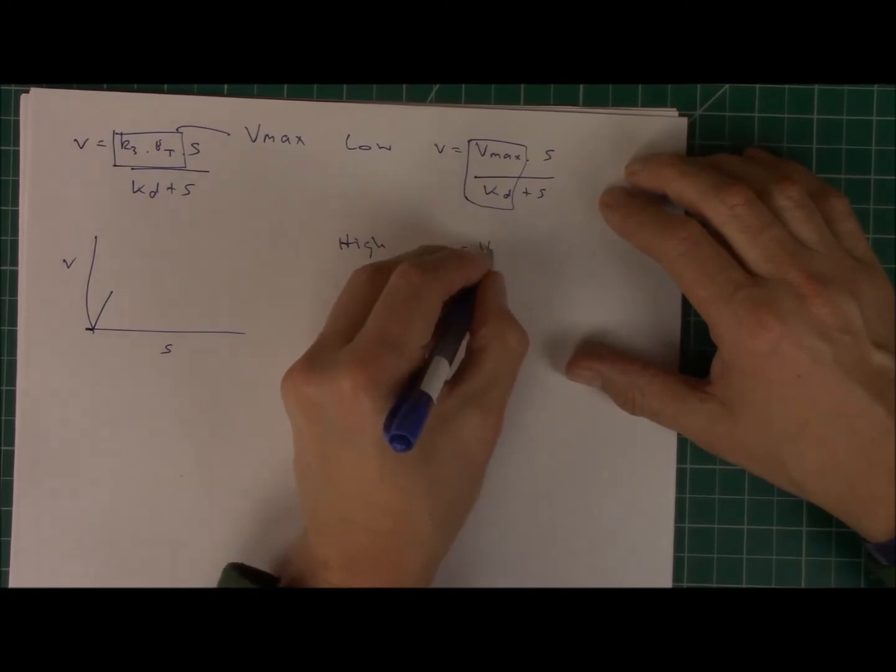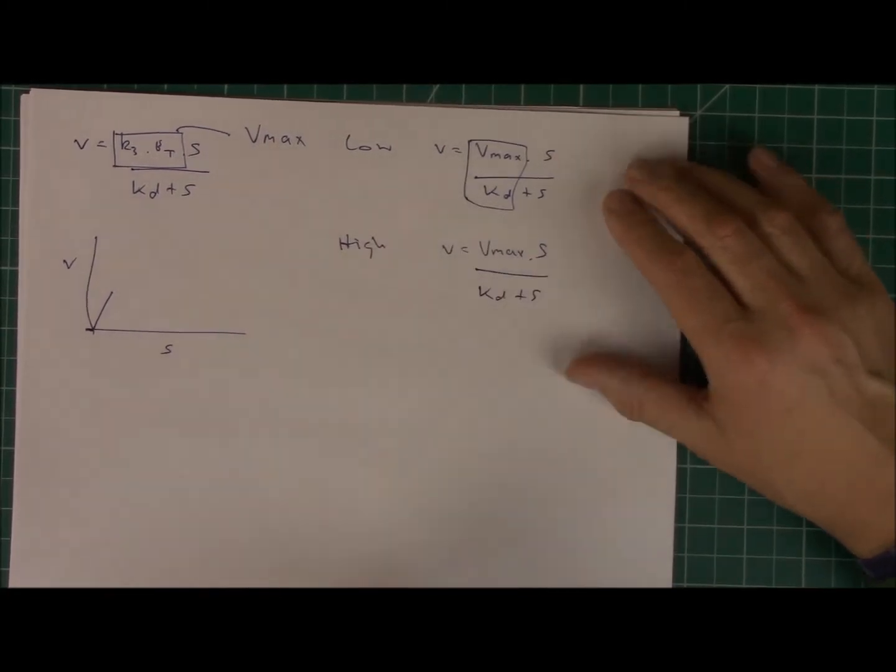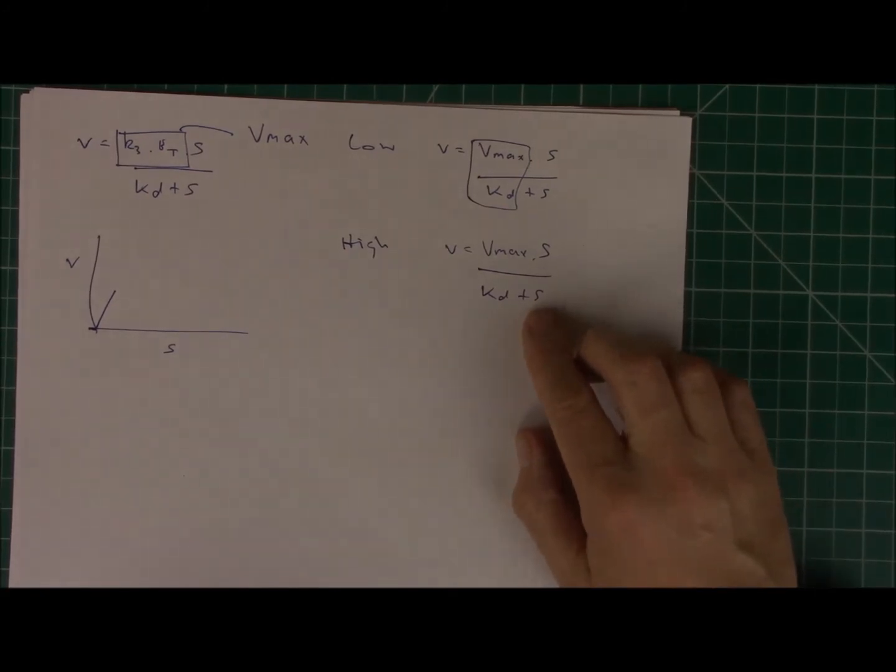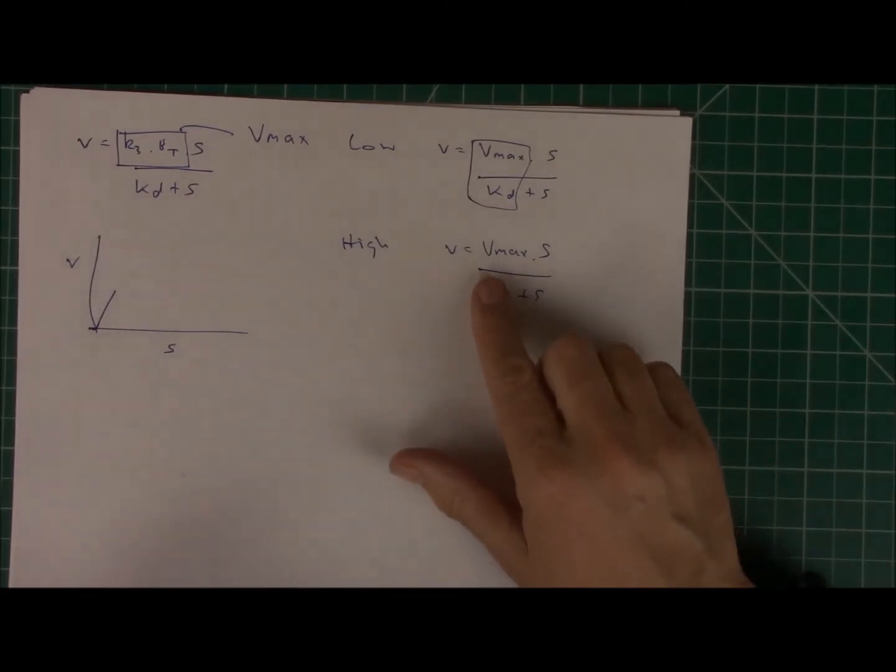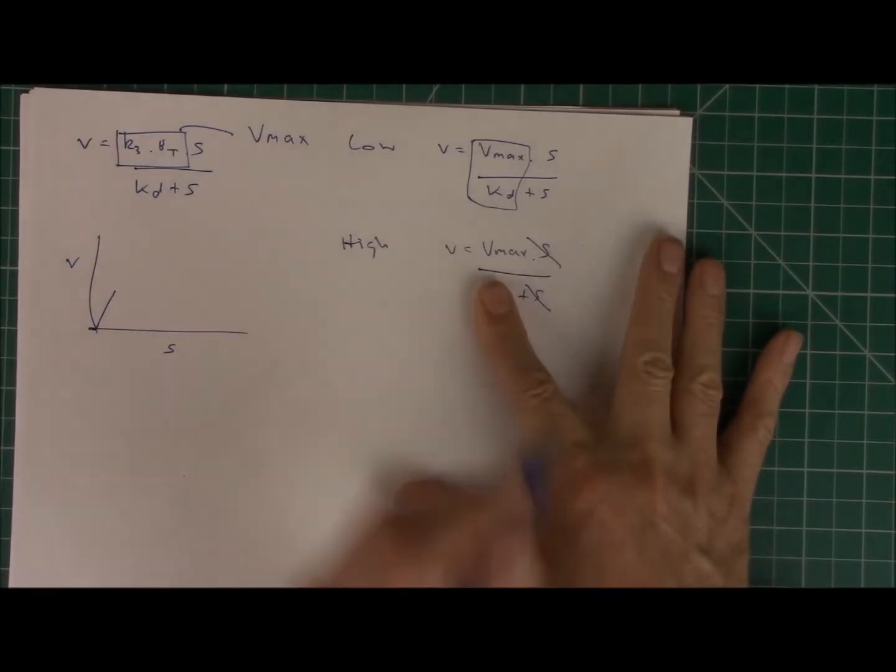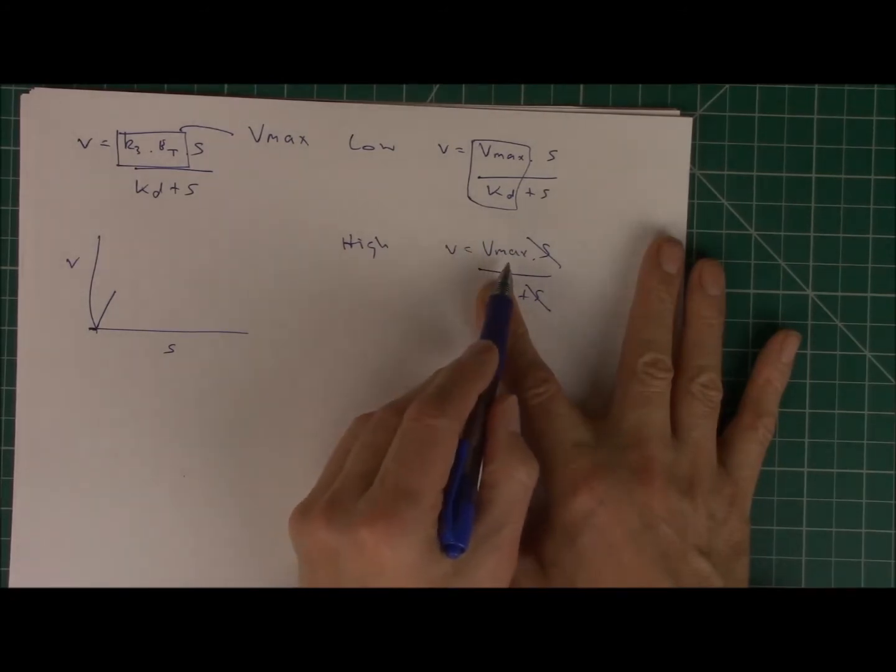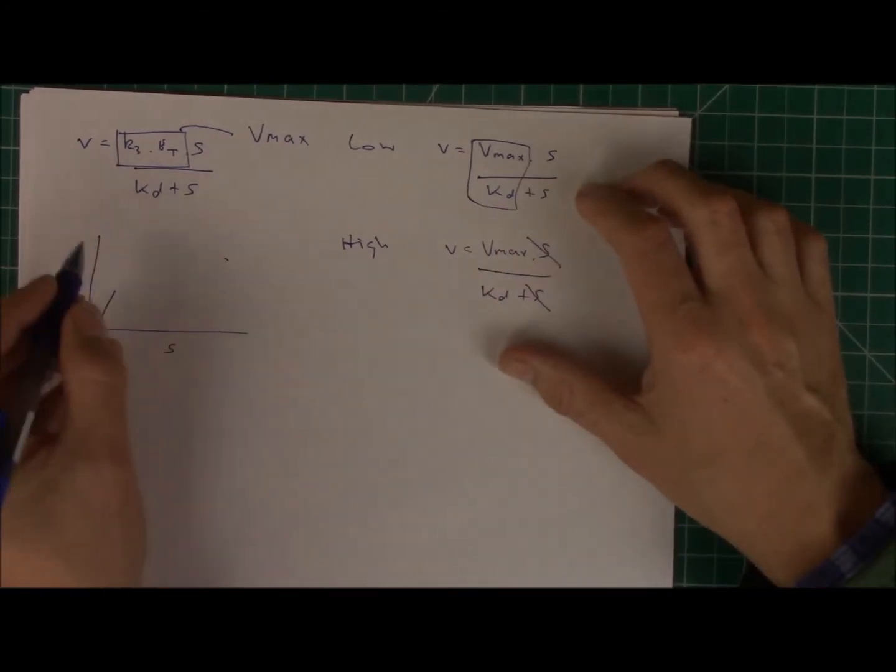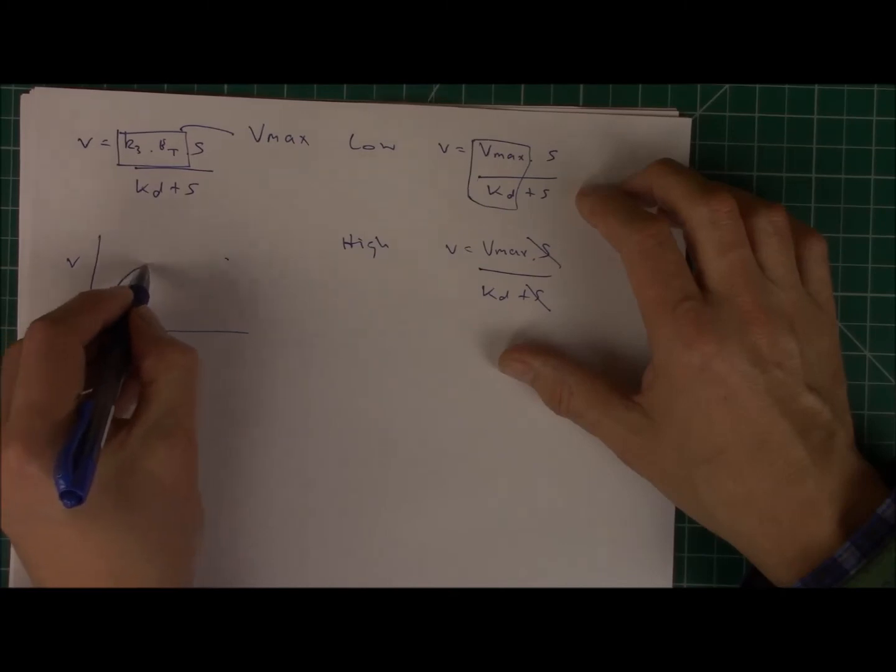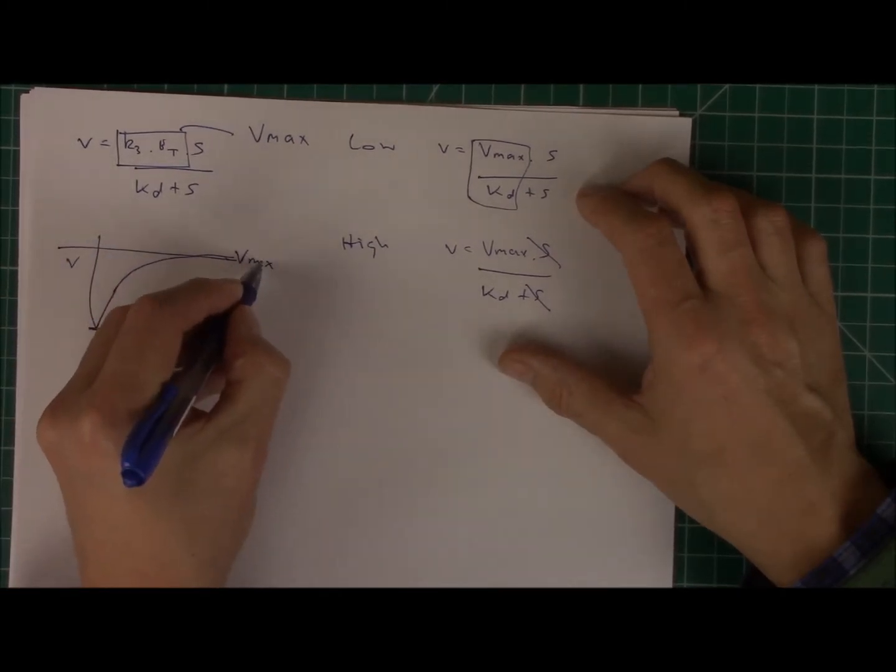What happens at high S? So at high S, let's write this down again. So now at high S, when this is large, S dominates the denominator. So I can pretty much ignore the dissociation constant. If I do that, of course I can cancel the S's. And so at high S, V tends to Vmax. So V tends to Vmax, so it'll curve up and do that. And that's fine, Vmax.